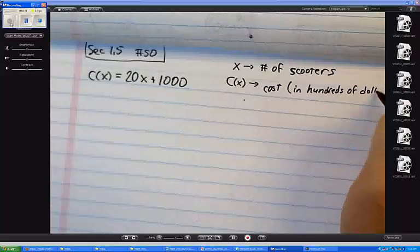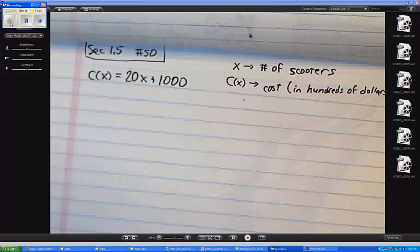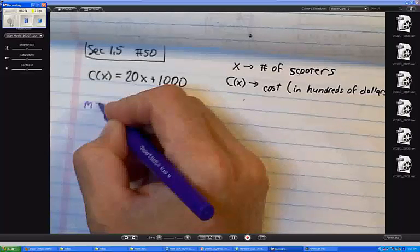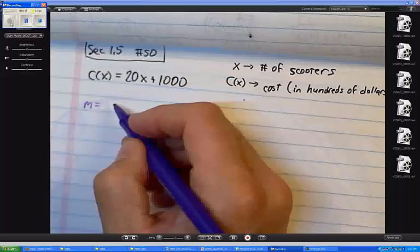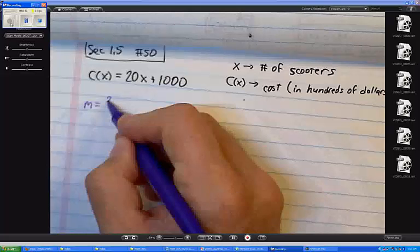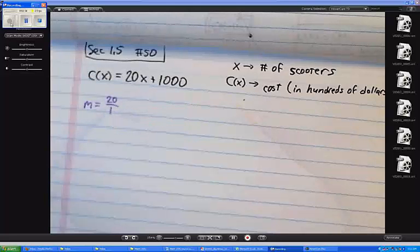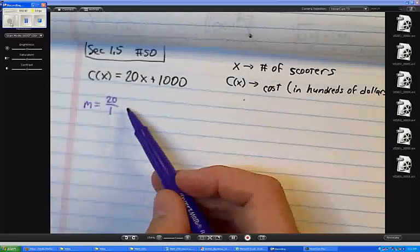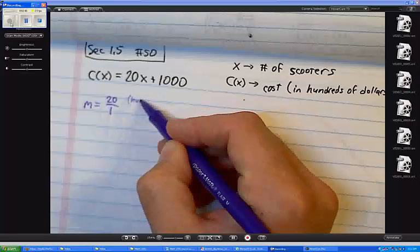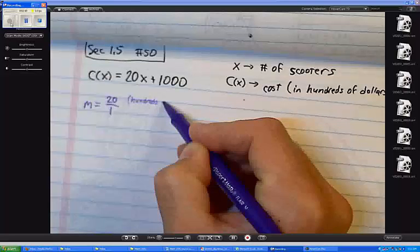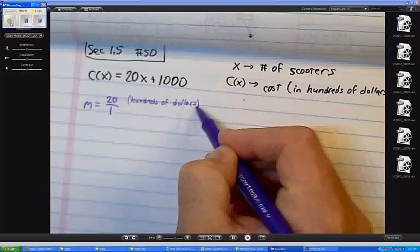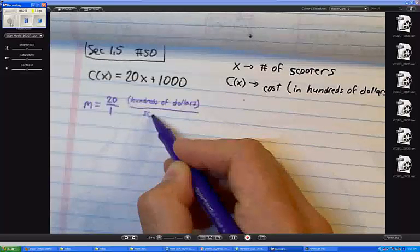C of X is my cost in hundreds of dollars. Now, I understand that in this problem, M, my slope, means something. M is, let's see, 20 over 1, right? That's how we would write it, rise over run. What are the units? 20 what? Well, what's the Y? That's in hundreds of dollars, right? And then these are scooters.